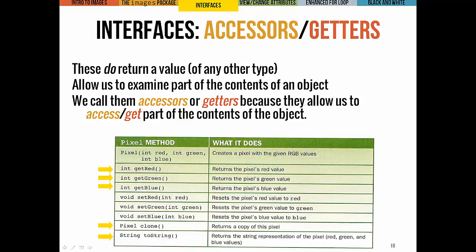If we wanted to get information about an object or access it, we'd use an accessor or a getter — a method that usually does return a value. In this case, we have getters that return int: getRed, getGreen, getBlue — they give us the particular color value of a single pixel. Clone returns an entire pixel object containing three colors. And we also have a toString method, which returns a string — basically a way to represent an object as a string, such as for printing.